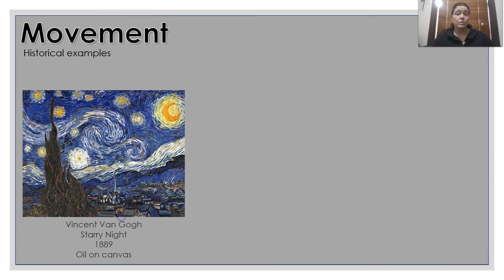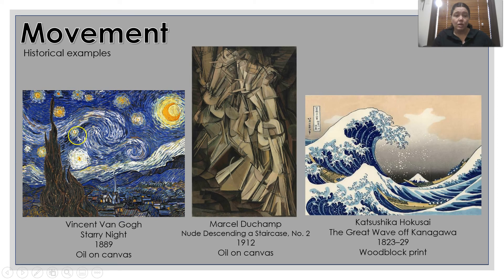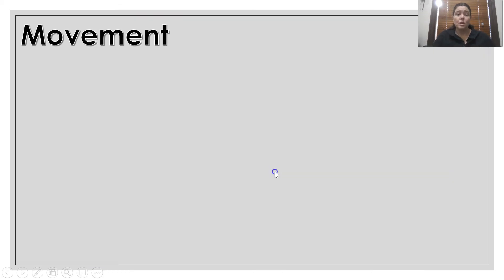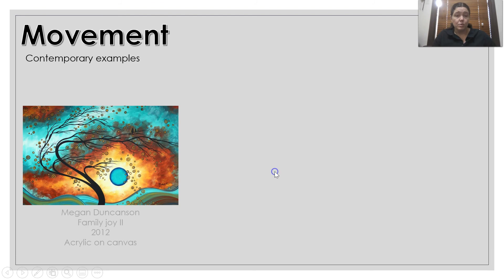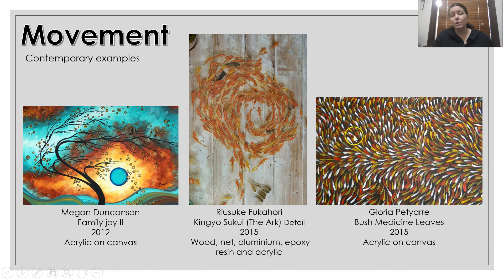Some examples of historical works depicting movement. Probably the most famous is the Van Gogh works — you can see the movement within the sky. Duchamp's work with the Nude Descending a Staircase shows the movement of the person walking down the stairs. And even The Great Wave — you can see and feel the movement within the water. Some contemporary examples of movement — they're all showing movement in different ways. The Petagnari work with the bush medicine leaves is showing beautiful movement — you can see it's all flowing through.